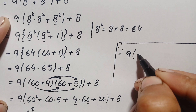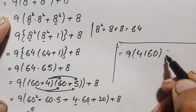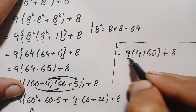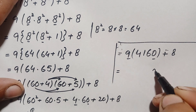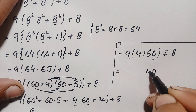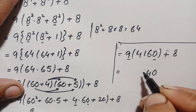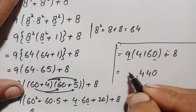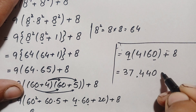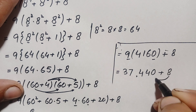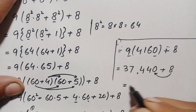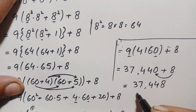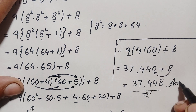We multiply 9 times 4160 starting from the ones position: 9 times 0 is 0; 9 times 6 is 54 — write 4, carry 5; 9 times 1 is 9, plus 5 is 14 — write 4, carry 1; 9 times 4 is 36, plus 1 is 37 — so 9 times 4160 is 37440. Adding 8 gives 37448. So the final answer is 37448.